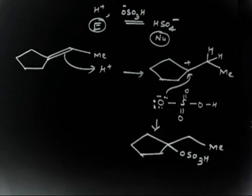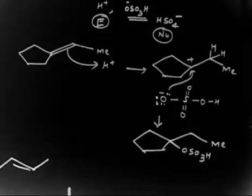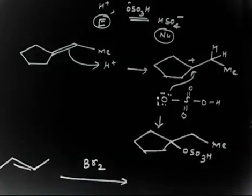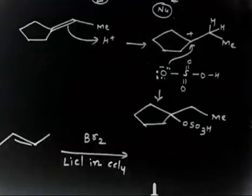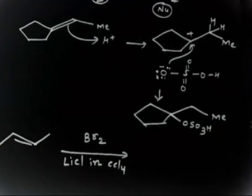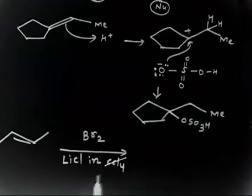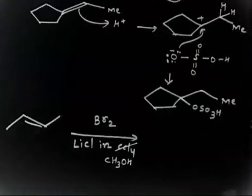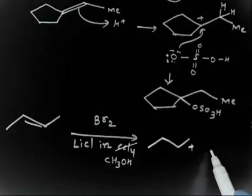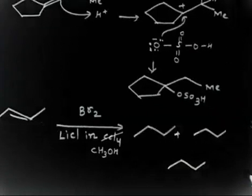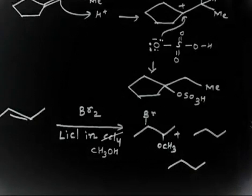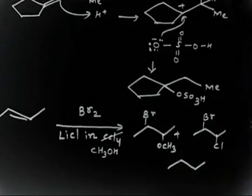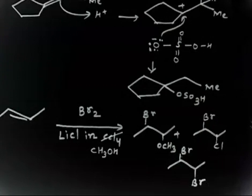The next reaction: we have an alkene treated with Br₂, and the solution also contains LiCl in CH₃OH as the solvent. Treating in this solvent, we are getting three products. In one product we have Br and OCH₃; in the next product we have Br and Cl; and in the third product we have Br and Br.